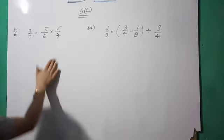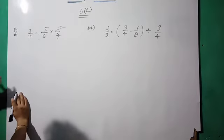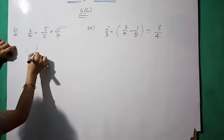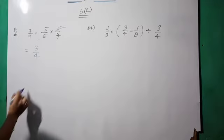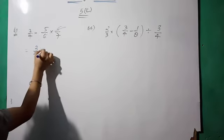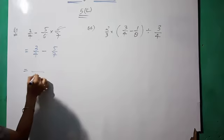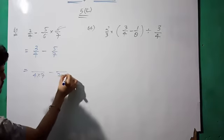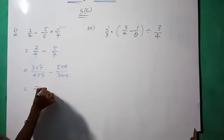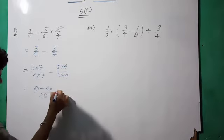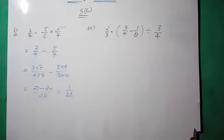Okay, we have three by four first. We multiply — six cancels with six — so we have three by four. Now three by four minus five by seven. We take the LCM, which is four into seven, that is 28. Multiply five into four and three into seven: three sevens are 21, so 21 minus 20 upon 28. The answer is one upon 28.